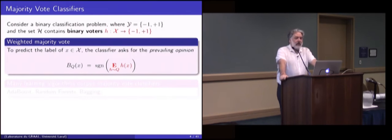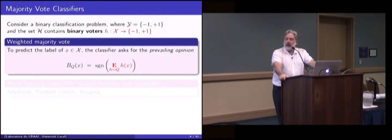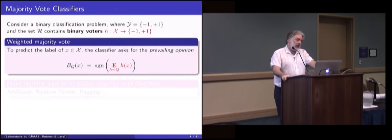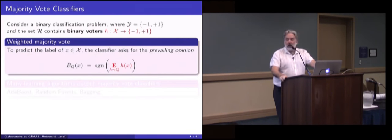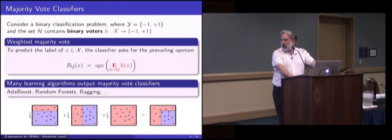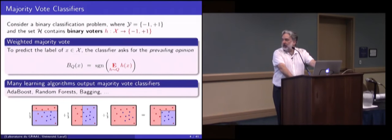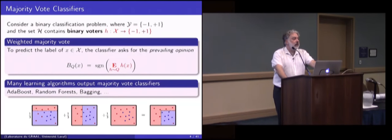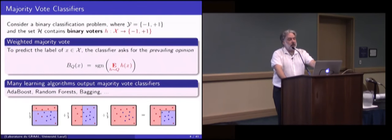For PAC-Bayes, we are interested in what we call the majority vote classifier. You have a bunch of predictors and they all have their opinion; you give some weight to each predictor, and the majority vote simply chooses which category has the most votes. Many learning algorithms output a majority vote even if they are not considered as such — all ensemble methods are that way, but you can also see a support vector machine as a majority vote, and the last layer of a neural network as some kind of majority vote. Q is the weight that you give to the voters — we will call it the posterior.